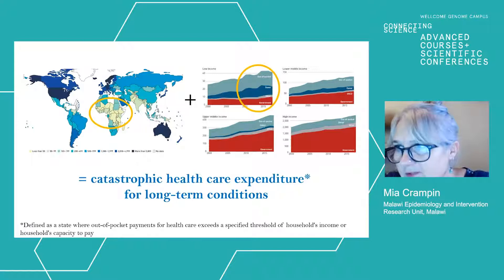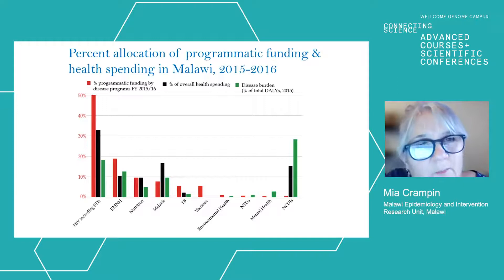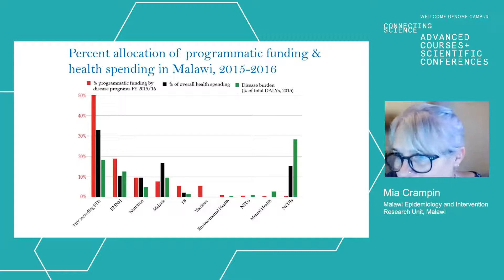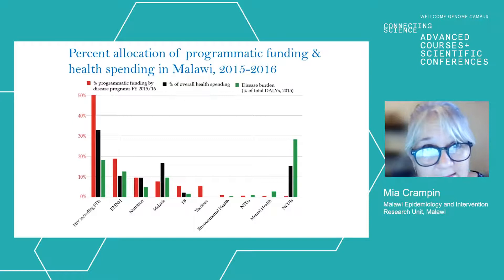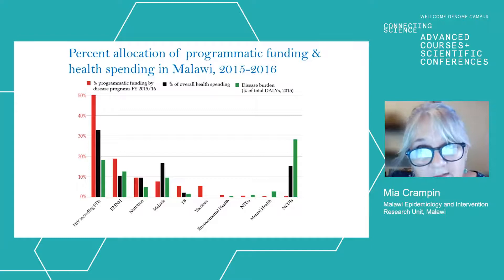The distribution of these funds doesn't even mirror the greatest need. Taken from the Malawi Lancet Non-Communicable Diseases and Injuries and Poverty Commission report, you can see that NCDIs on the right-hand side, although responsible for a big proportion of DALYs lost and a large proportion of healthcare spending, have very little programmatic funding and no donor funds allocated.